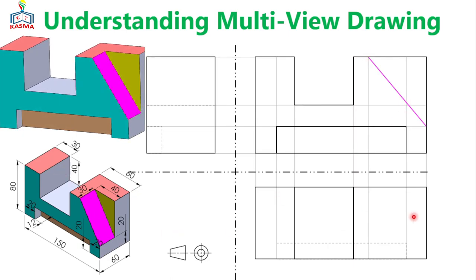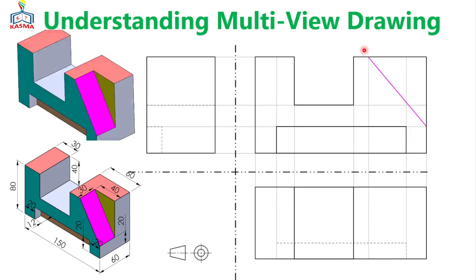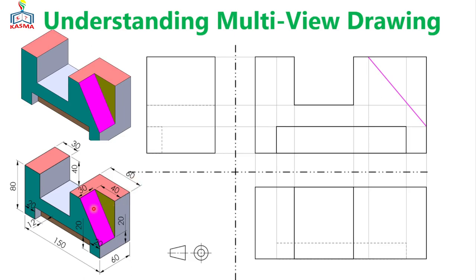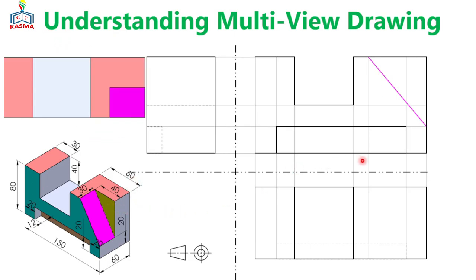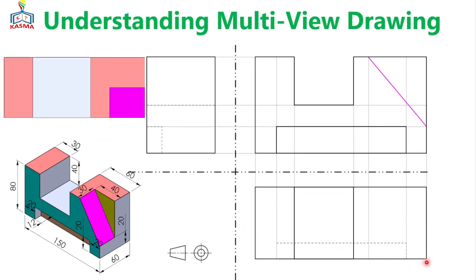So once you have that, we have only this one line on the front view. The multi-view drawings of this object show only one added line for the front view. For the top view, if you are looking from the top, the object will be constructed from here to here. From here to here it is 30 mm — we measure 30 mm and construct one horizontal line. Then we construct this line which turns into the lower part, and finally you will have this shape.